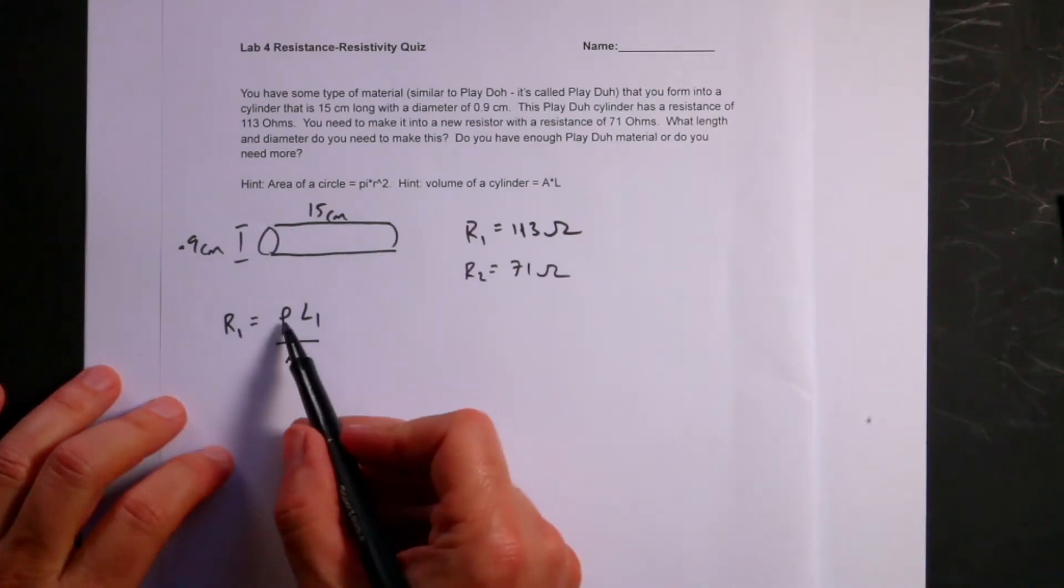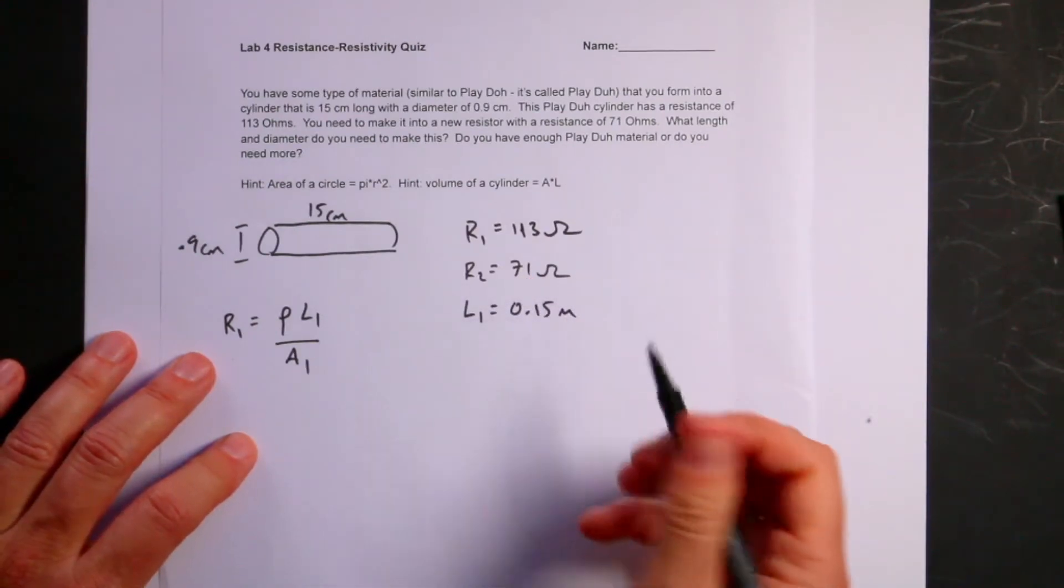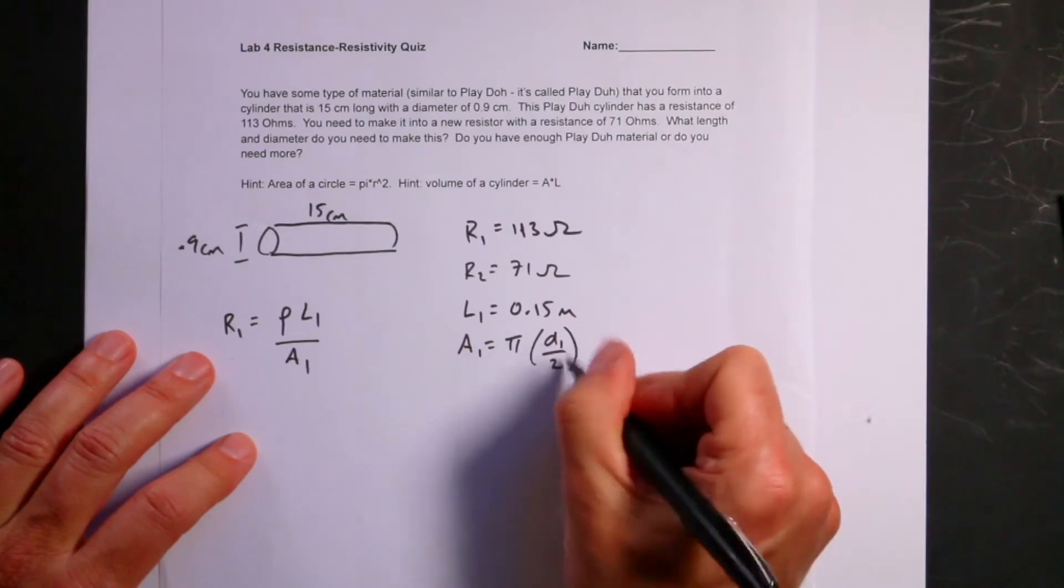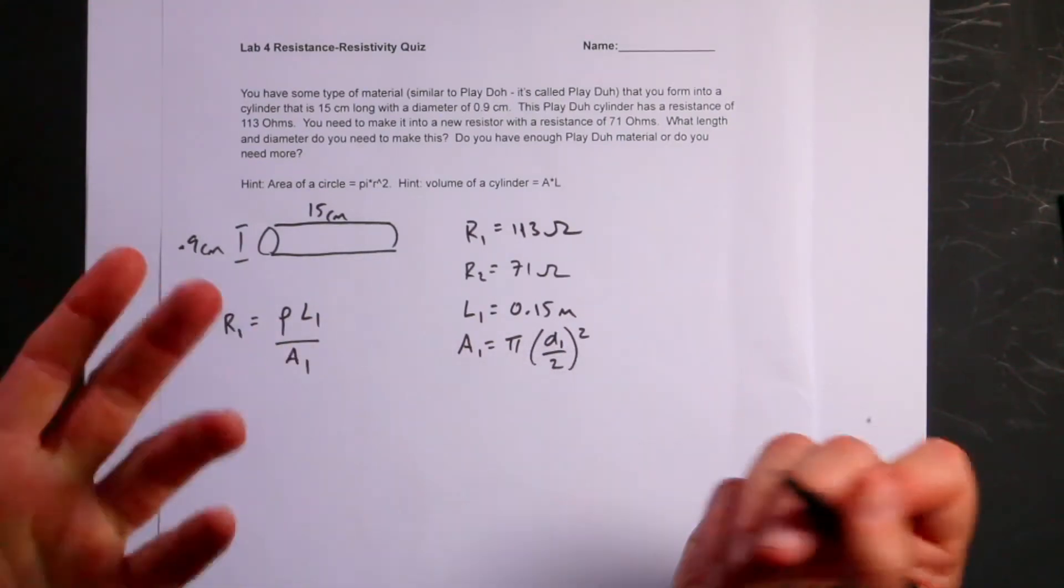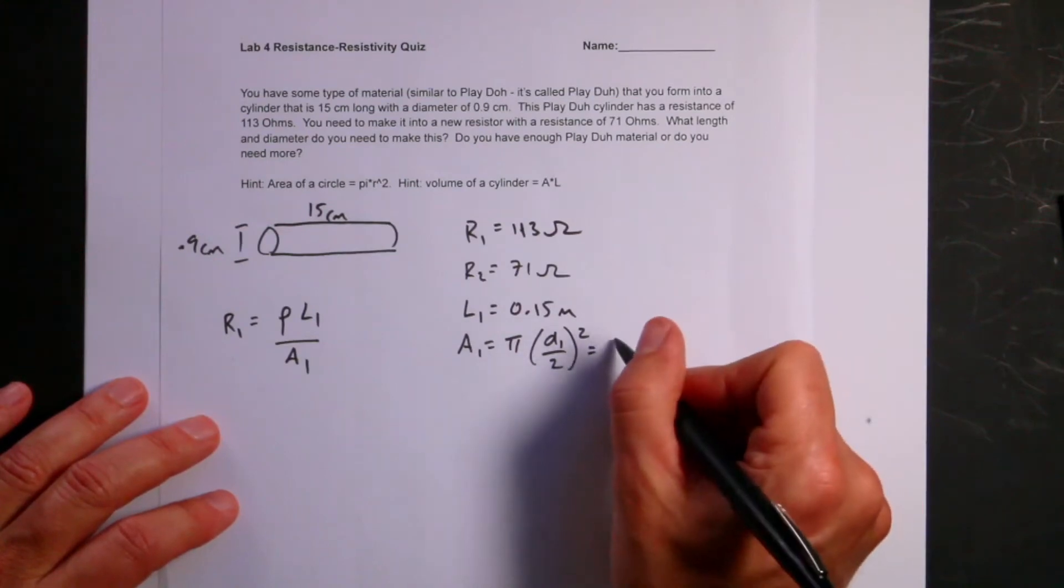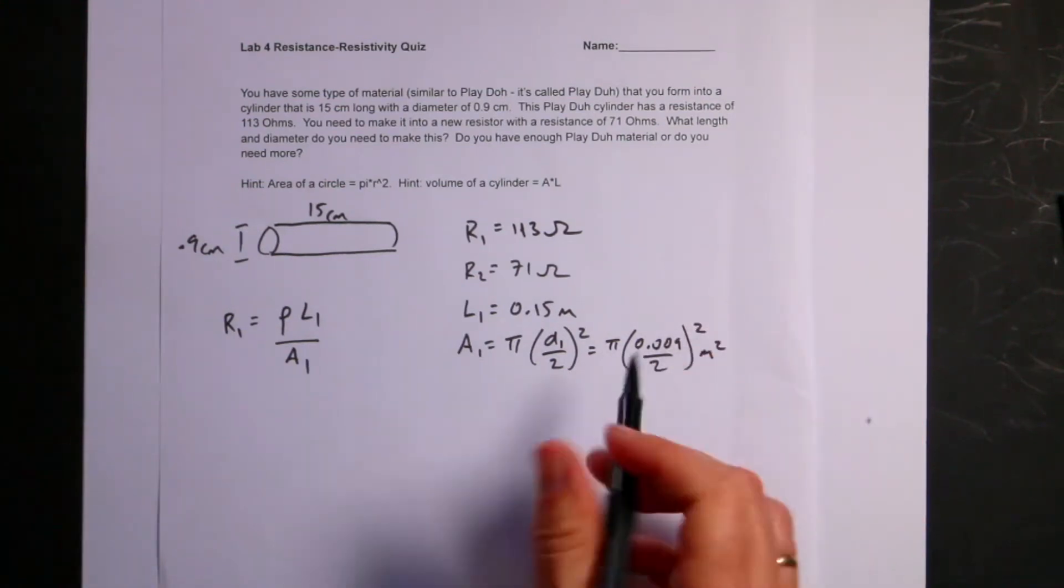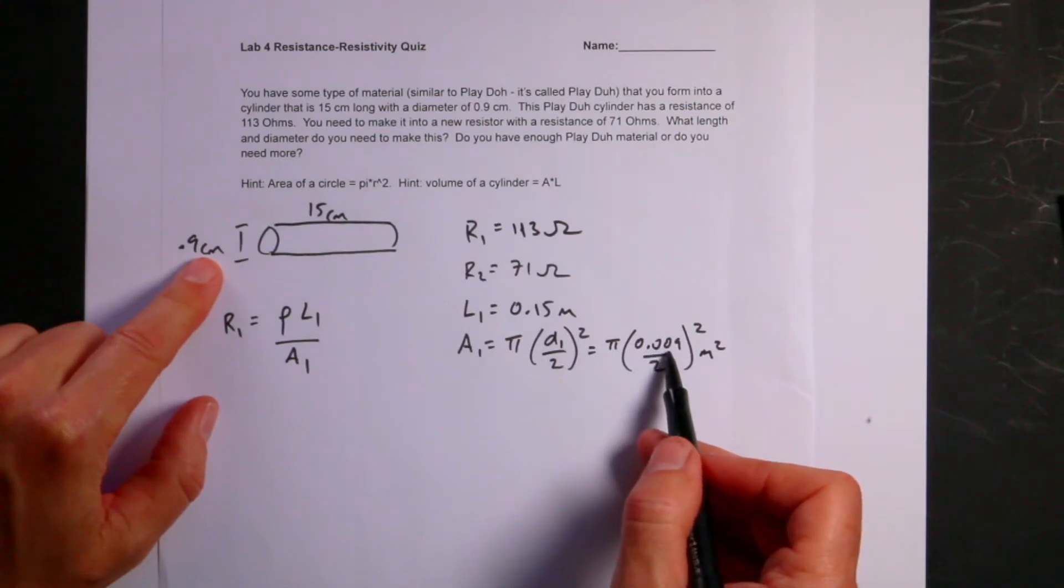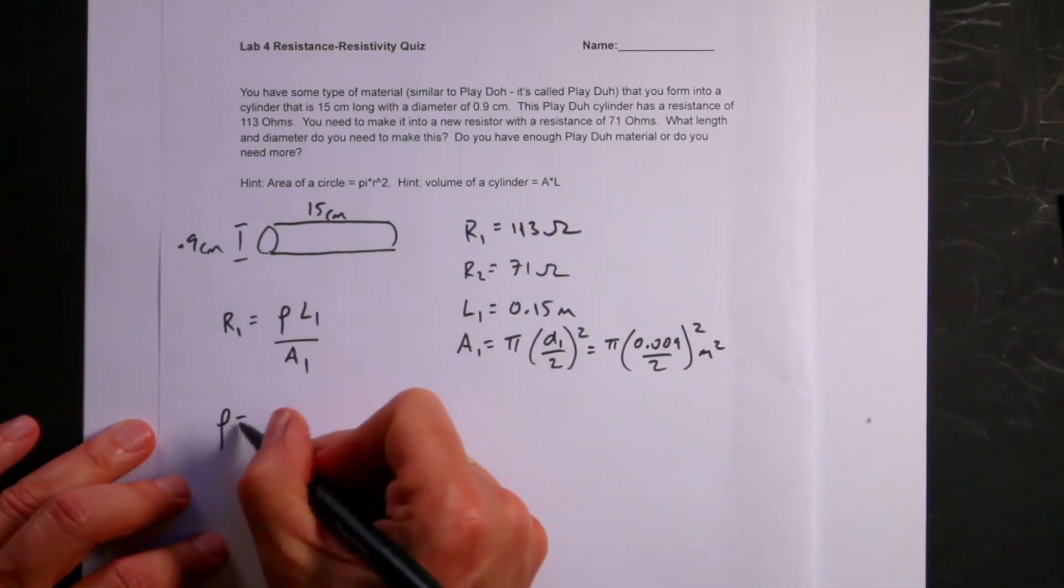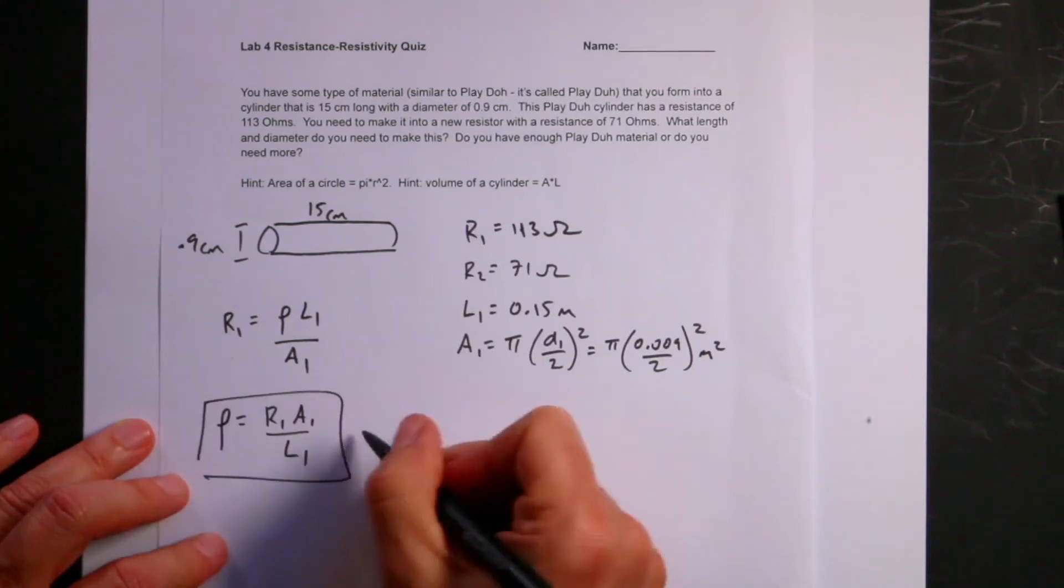Right away, I can solve for this. Let's write L1 equals 0.15 meters. A1 is going to be equal to pi times D1 over 2 squared, because it's pi R squared, but I gave the diameter because usually you measure the diameter. That would be pi times 0.009 over 2 squared meters squared. So I can solve this for the resistivity and I get rho equals R1 A1 over L1.